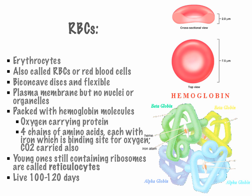Erythrocytes — also called red blood cells — are biconcave discs that are flexible. There's a plasma membrane but no nuclei or organelles, and they're packed with hemoglobin molecules — the oxygen-carrying protein. You've got four chains of amino acids, each with iron as the binding site for oxygen. CO2 is also carried. The young ones still contain their ribosomes — those are the reticulocytes.